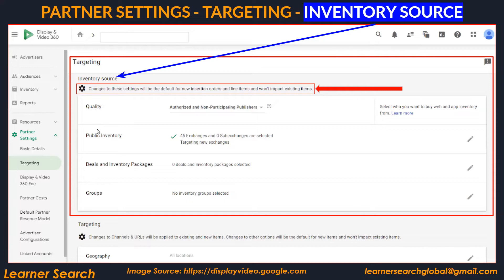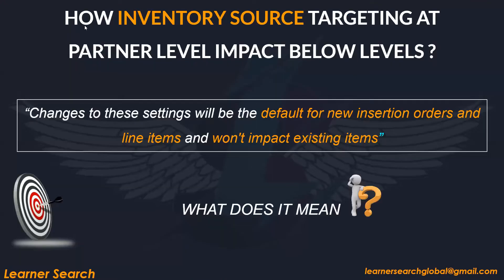You can see the same options like Quality, Public Inventory, Deals, and Inventory Packages and Groups. There is a note here I'm going to explain more. So how does Inventory Source Targeting at Partner Level impact lower levels? We shall look into that.